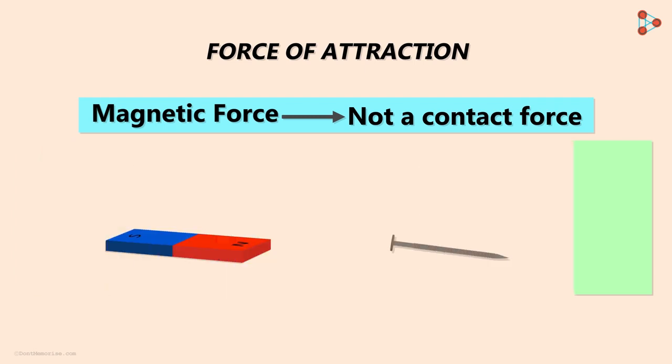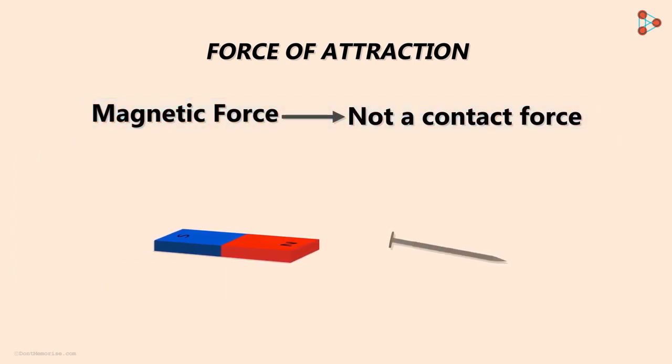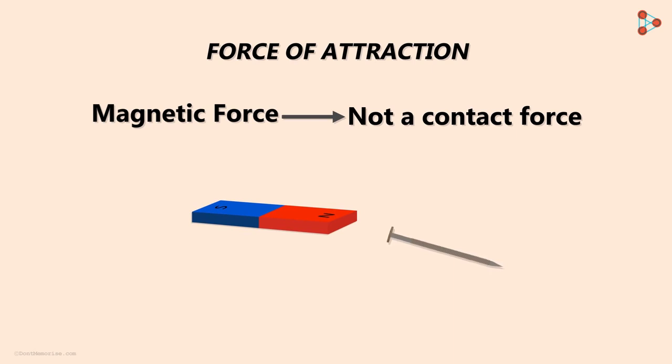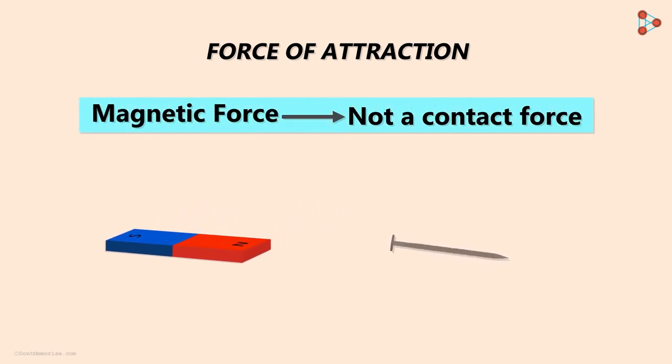To understand this better, we bring this magnet close to the nail and move it slightly up in the air. You will find a slight movement in the iron nail as well. This means that the iron nail is under the influence of a magnetic force even though it's not in contact with the magnet. It again proves that a magnetic force is not a contact force.